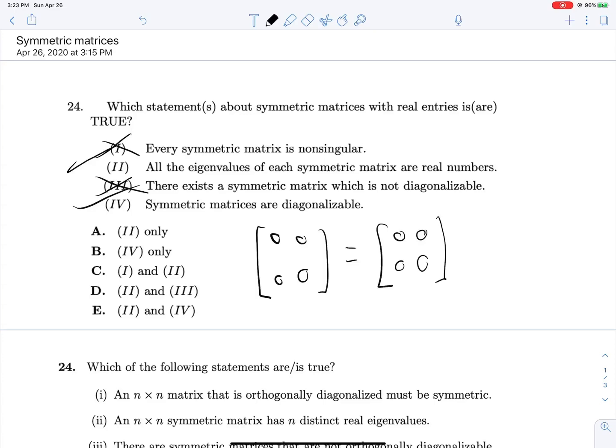And 4, symmetric matrices are always diagonalizable. Yeah, so 2 and 4, not 2 and 3, 2 and 4 is our answer for 24.